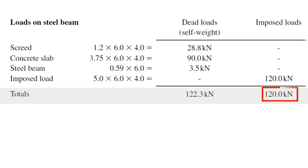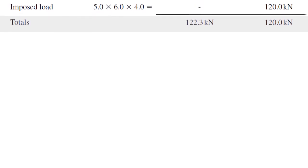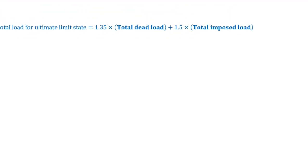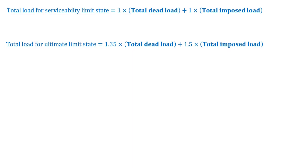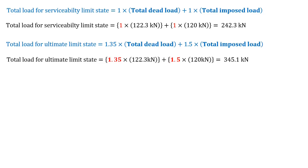Now we can find the design load. There are two types of loads, which are load for serviceability limit state and load for ultimate limit state. By substituting total dead and imposed loads to these equations,